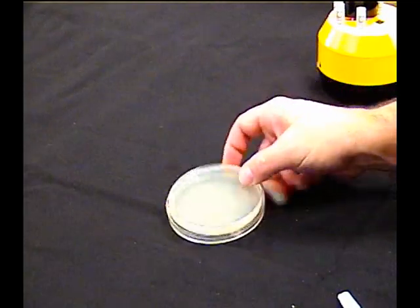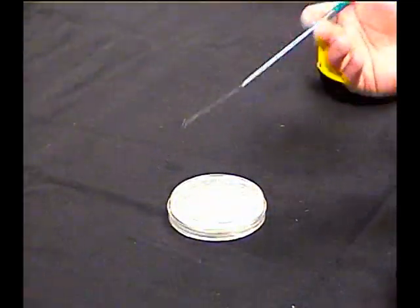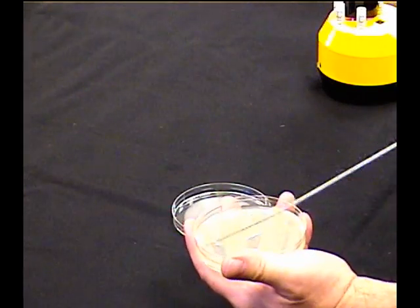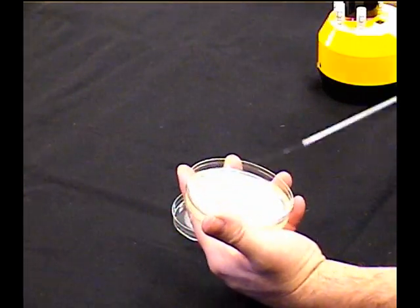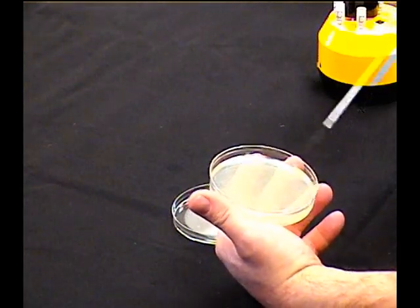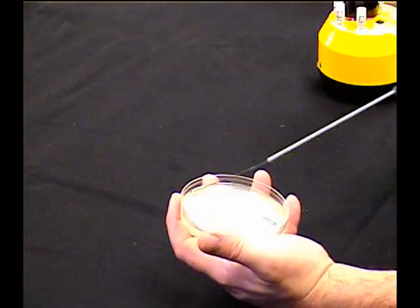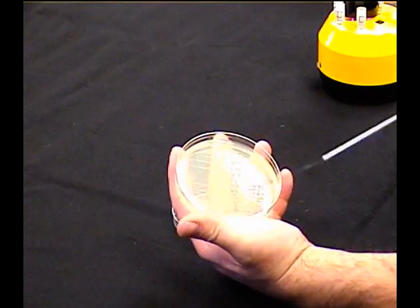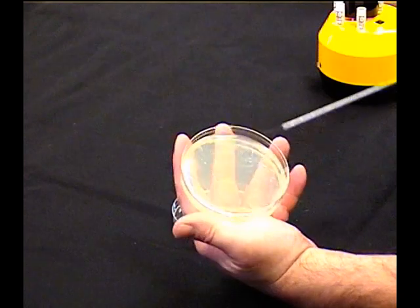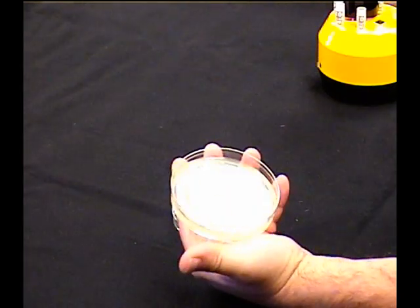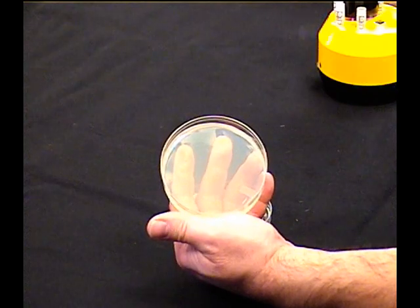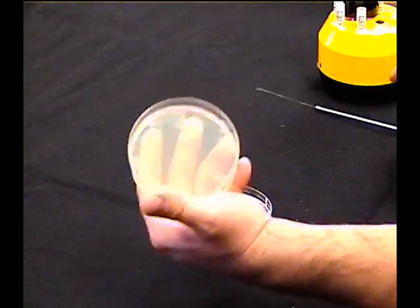You're going to take a plate, take an organism, flame your loop, cool your loop, and spread the organism over the entire surface of the plate. Just keep going until you've covered the plate completely. You'll notice that I've turned this multiple times to keep going back and forth. Don't talk on the plate while you're doing it. Then flame your loop, cool your loop. That part's done.